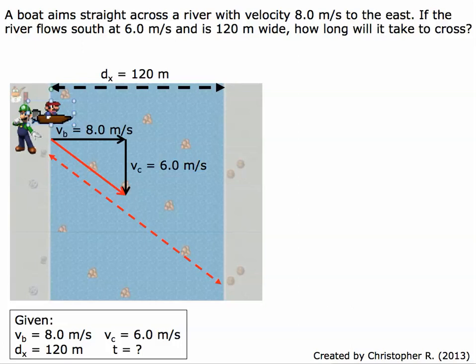We can see the red dashed line is of greater distance than the black dashed line, but we do not know this distance. So we're going to have to use a different method. We're going to use 120 meters and the velocity of the boat, which are both parallel to each other.